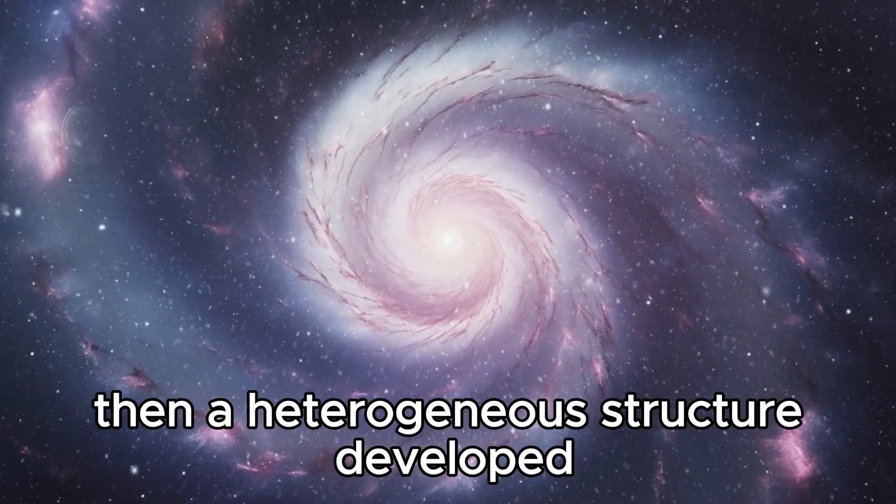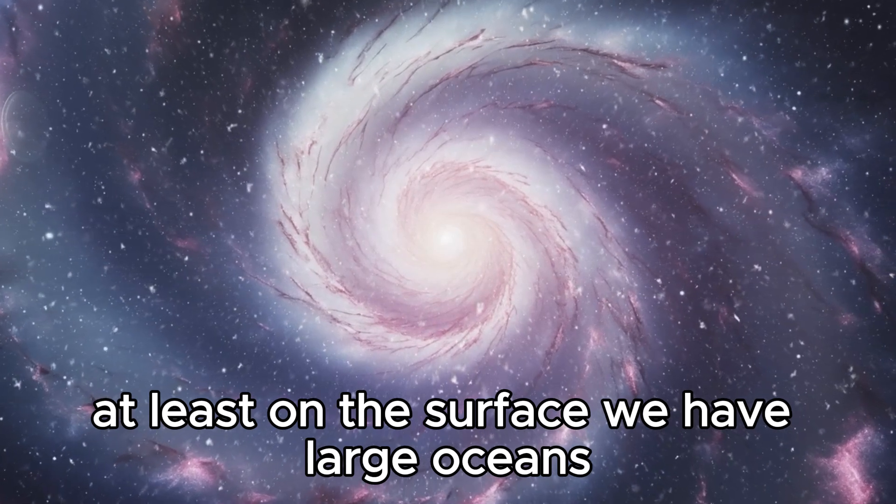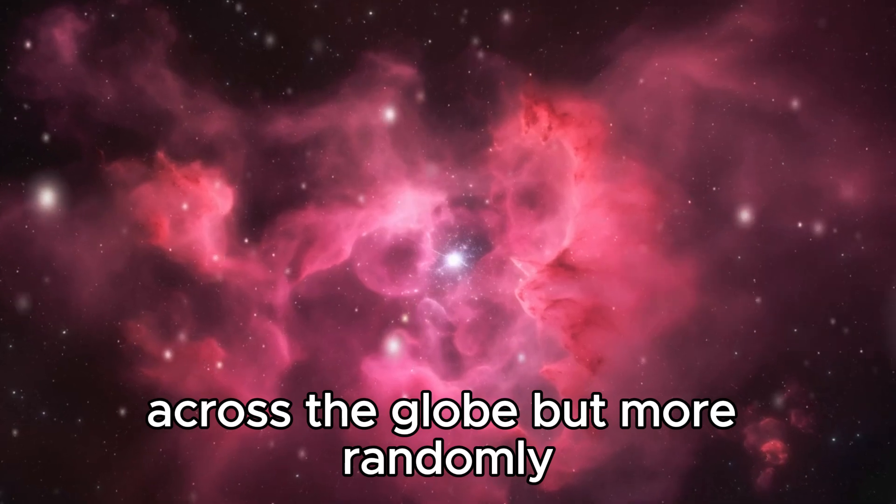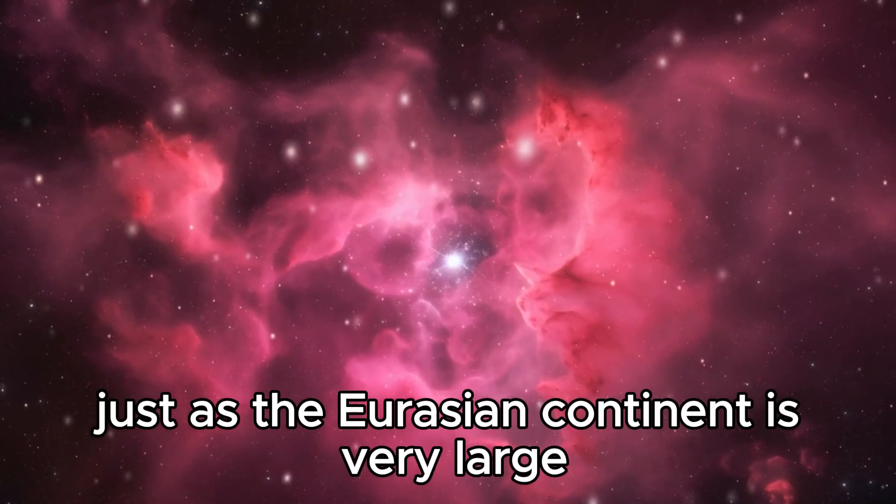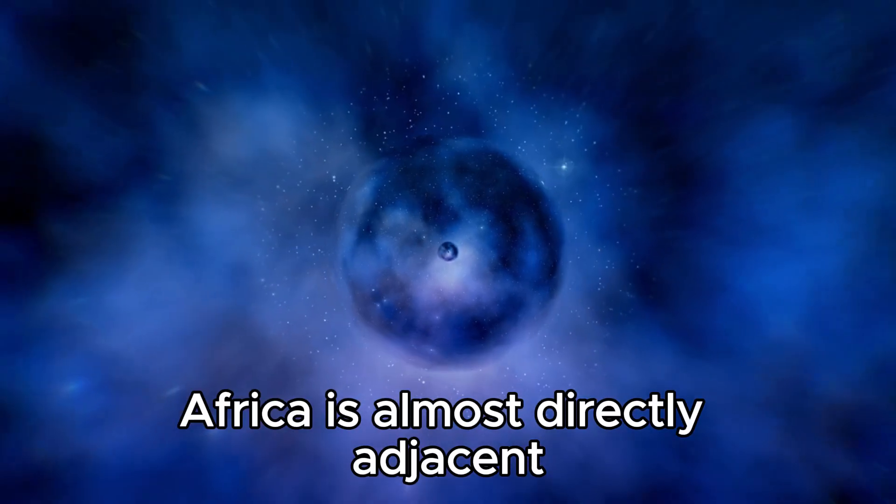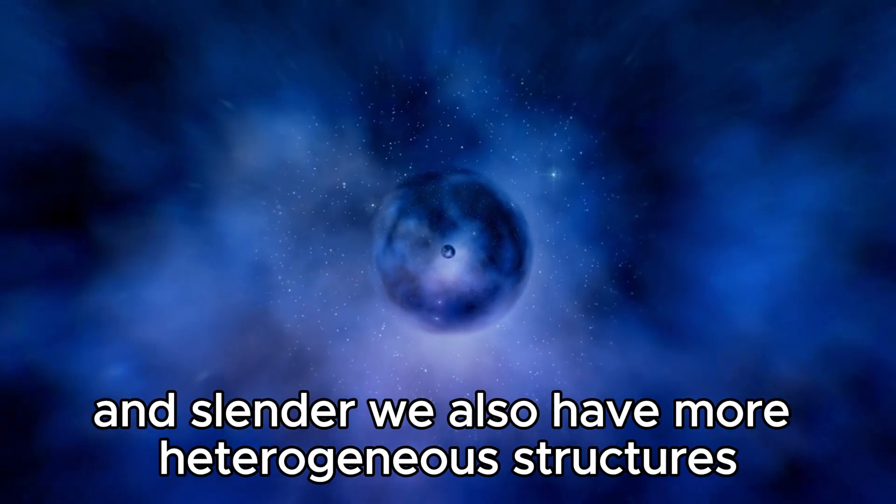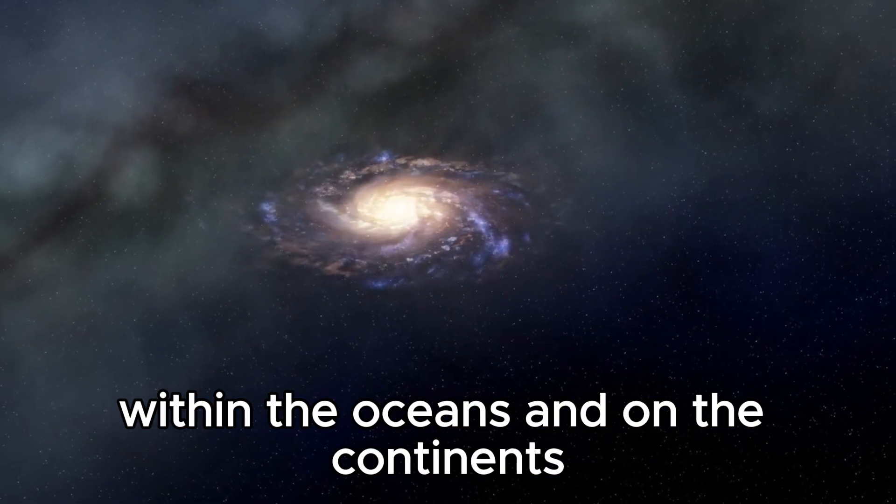Then, a heterogeneous structure developed, at least on the surface. We have large oceans and land masses that are not necessarily evenly distributed across the globe, but more randomly. The Pacific is huge, just as the Eurasian continent is very large. Africa is almost directly adjacent, while the American continents are elongated and slender.